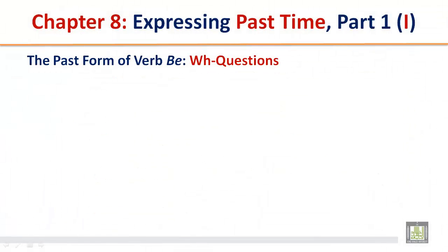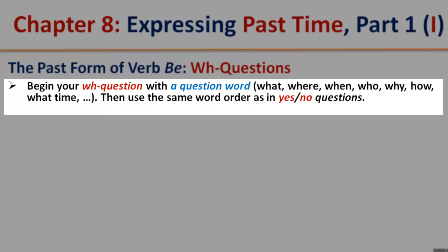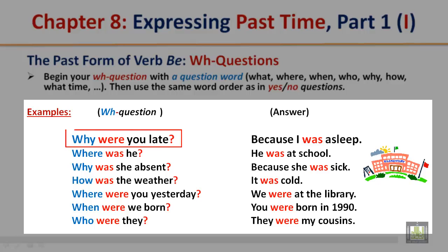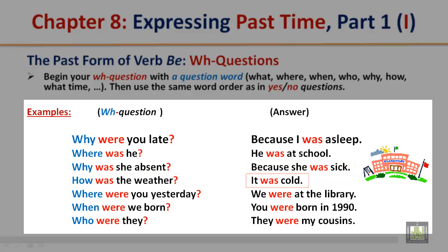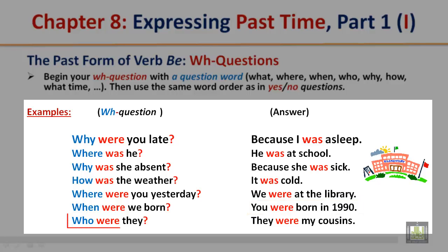The past form of verb be — WH-questions. Begin your WH-question with a question word: what, where, when, who, why, how, or what time. Then use the same word order as in yes or no questions. Examples: Why were you late? Because I was asleep. Where was he? He was at school. Why was she absent? Because she was sick. How was the weather? It was cold. Where were you yesterday? We were at the library. When were we born? You were born in 1990. Who were they? They were my cousins.